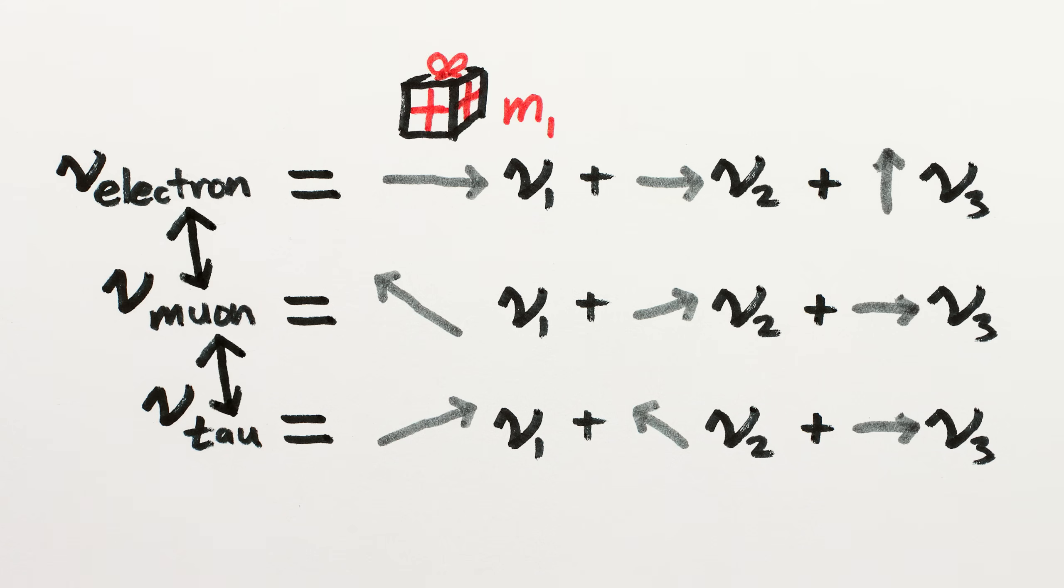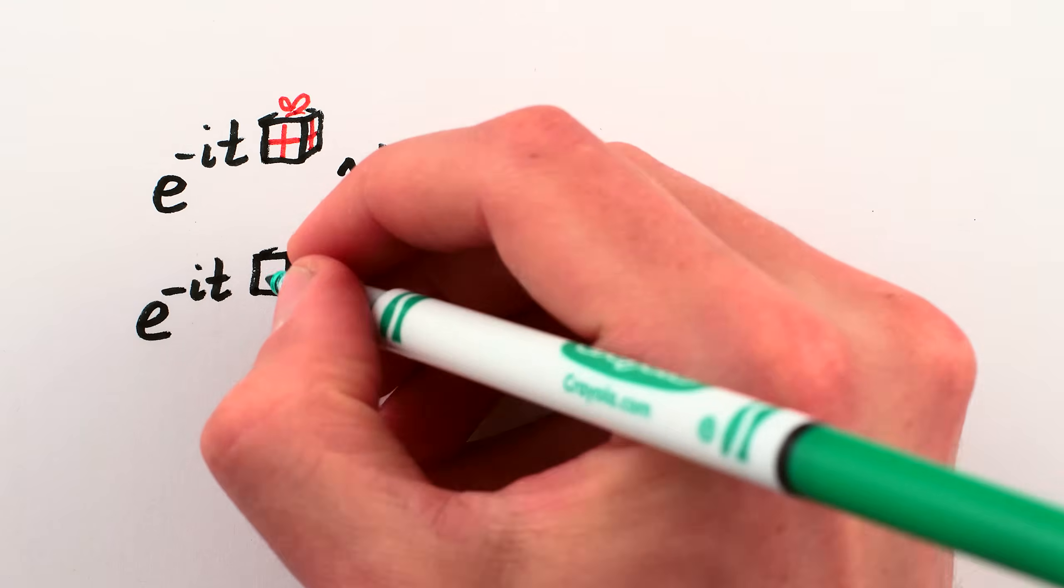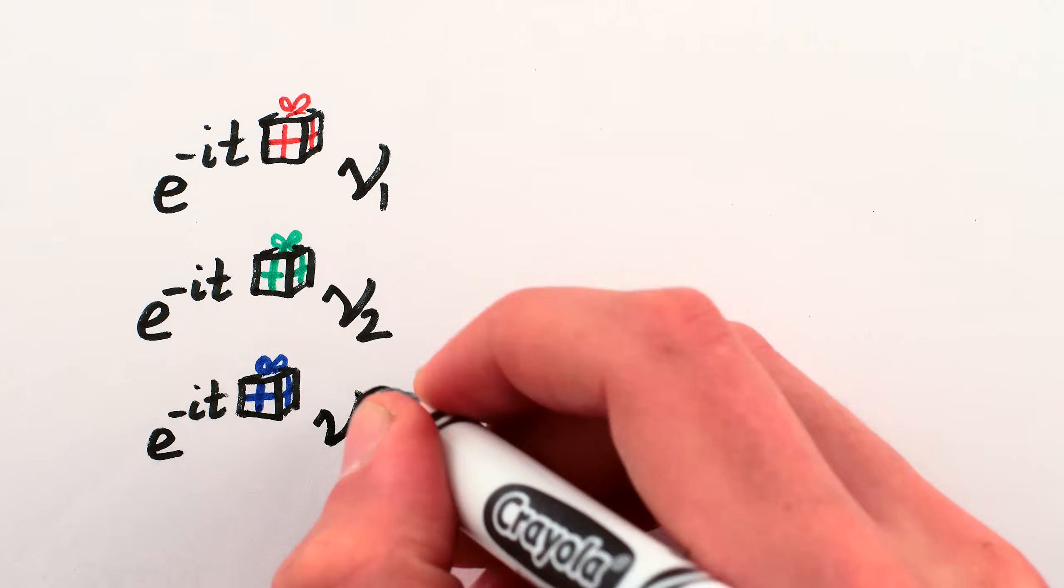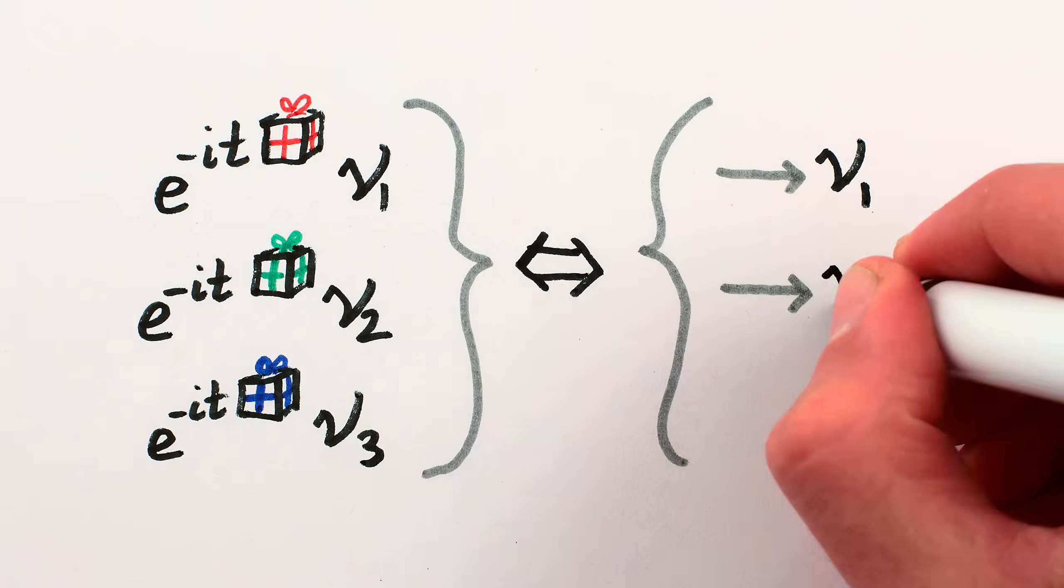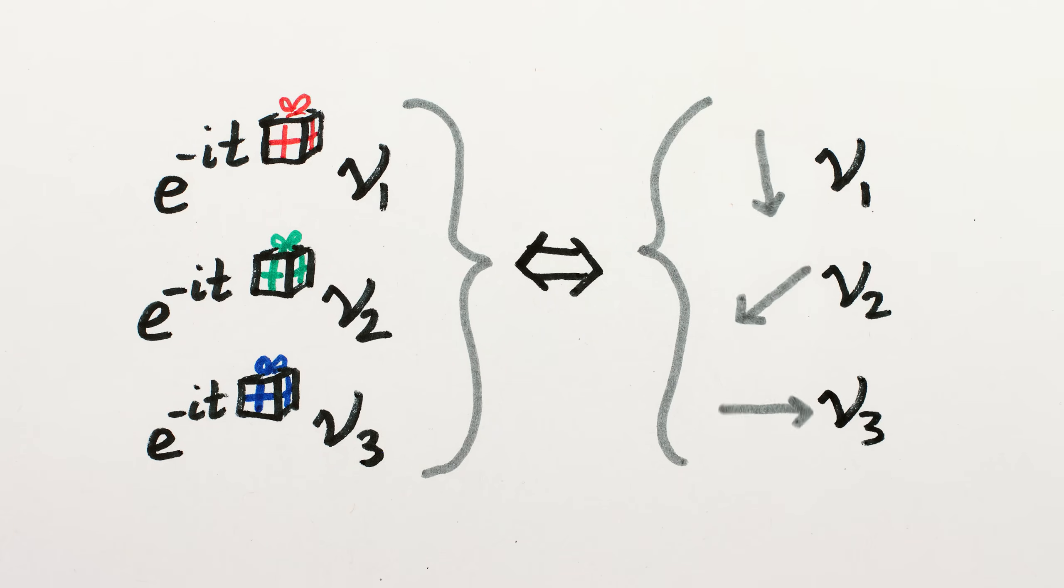That's because the traveling identities have different masses, so they travel differently from each other. Technically, what happens is they each pick up a complex numbered phase depending on their mass and how far they've traveled, but we'll just show that with arrows that rotate at different speeds, which is essentially the same thing.